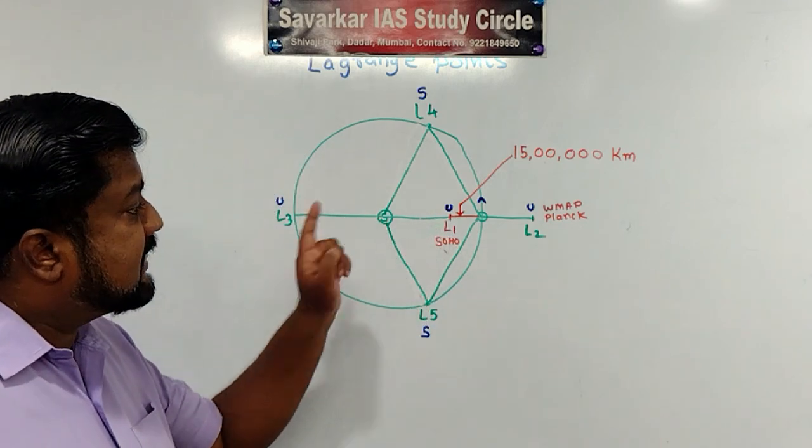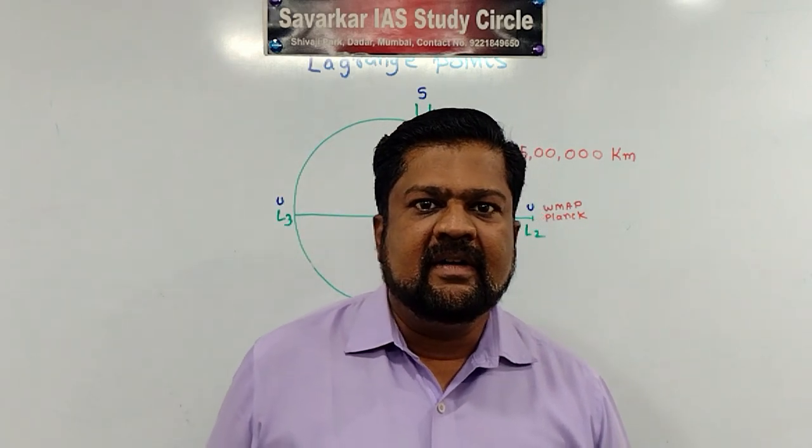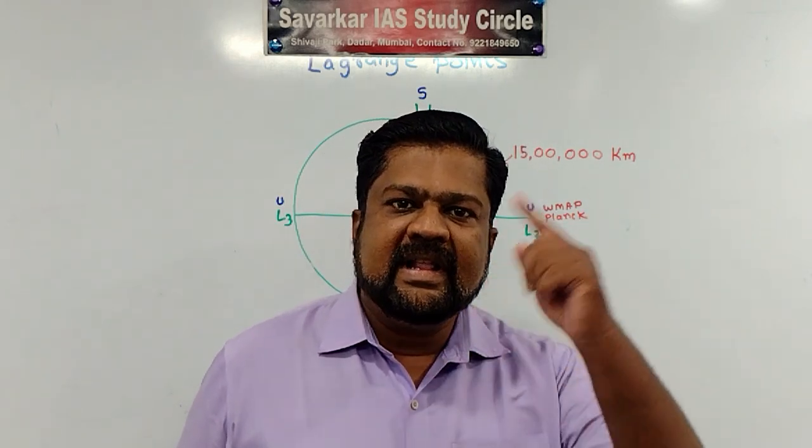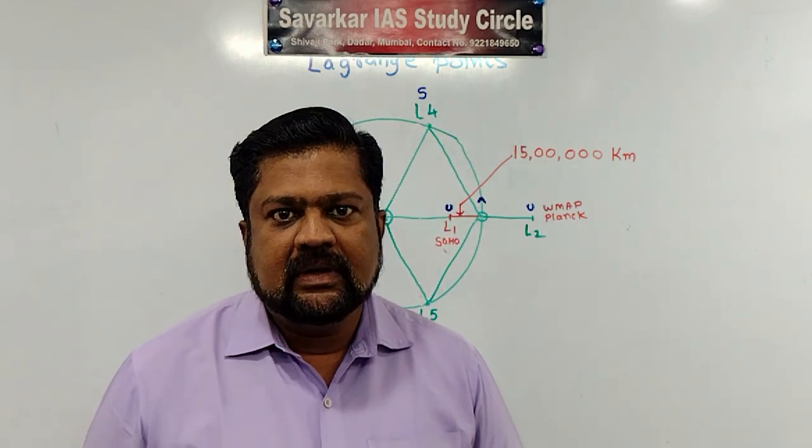I want to observe sun continuously. And if I am having orbit, say for example polar satellite is there, it orbits around Earth in 90 minutes. So it will not give me continuous look of sun.